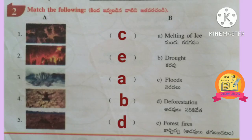We have to match the correct word for the given pictures. First picture is floods. Second picture is about forest fires. Third picture is melting of ice. Fourth picture is drought. Fifth picture is deforestation.